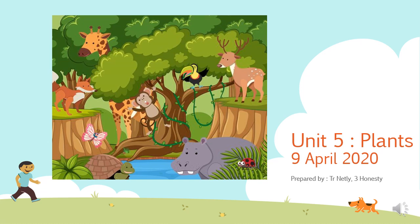Before we start the lesson today, I just want to recall what you had learned during last class. Basically, you have learned that there are six ways of reproduction in plants, which are suckers, seeds, underground stems, stem cutting, spores, and also leaves. So today, we will enter a new sub-topic, which is the importance of plant reproduction.